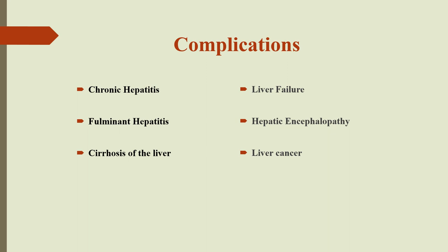Another complication can be fulminant hepatitis, which is a severe and potentially fatal form of hepatitis. It will start like normal hepatitis but will progress very fast and can develop severe liver failure, which can be life-threatening. Cirrhosis of the liver is a permanent scarring of the liver caused by chronic inflammation. It can also lead to liver cancer. Another complication is liver failure, which is an irreversible damage to the liver cells. And there is also hepatic encephalopathy, which is a life-threatening complication of liver failure.